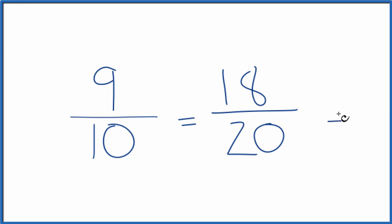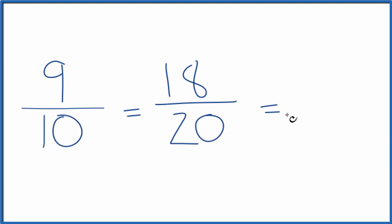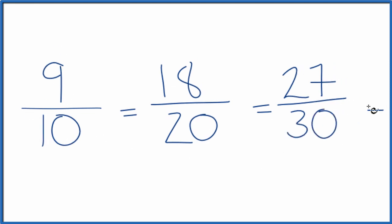Let's find another one. What if instead of 2, we multiply the numerator and the denominator by 3. 9 times 3 is 27. 10 times 3 is 30. Another equivalent fraction for 9 tenths. One more.